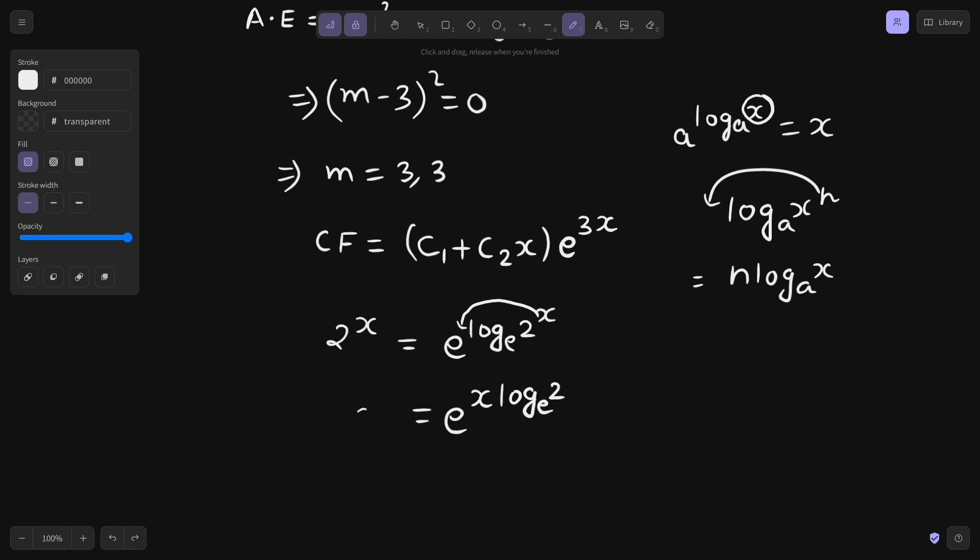What was looking as 2 power x is nothing but e power log 2 multiplied by x. Now, this can easily be compared with e power x because log 2 base e is also a constant. We can now apply the formula for e power ax.